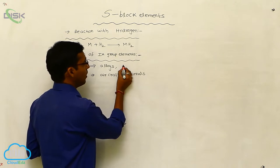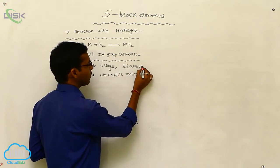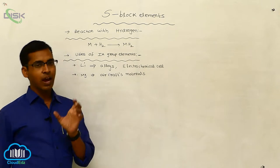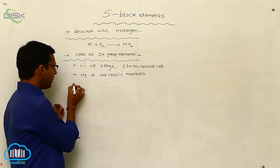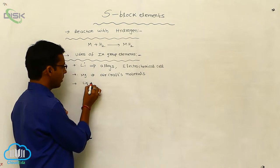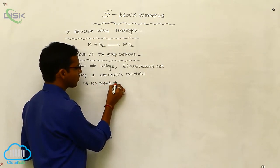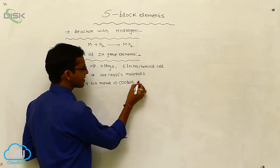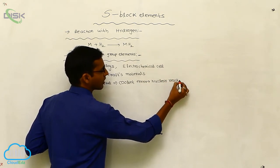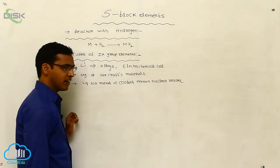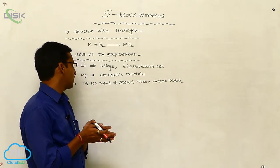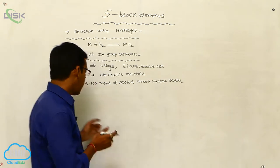Lithium metal is also used in electrochemical cells, acting as an electrode because it has a more negative ionization enthalpy value. Liquid sodium metal is used as a coolant substance in nuclear reactors.